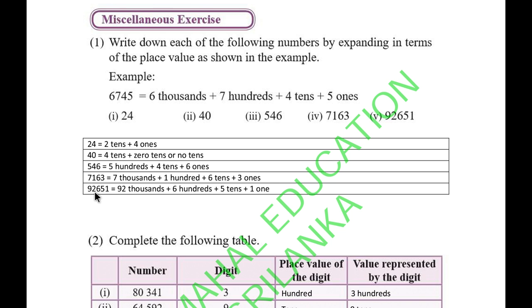For 92,651, you can write it as 9 ten thousands, 2 thousands, 6 hundreds, 5 tens, and 1 one. This way is better - 9 ten thousands, 2 thousands, 6 hundreds, plus 5 tens and 1 unit.